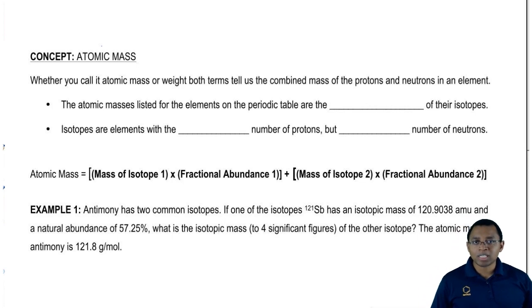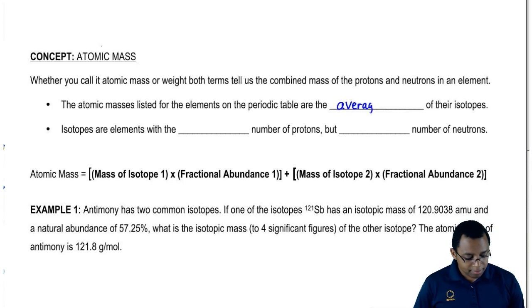Remember that the protons and the neutrons can be found within our nucleus. Now we're going to say atomic mass listed for the elements on the periodic table are just the average masses of their isotopes.